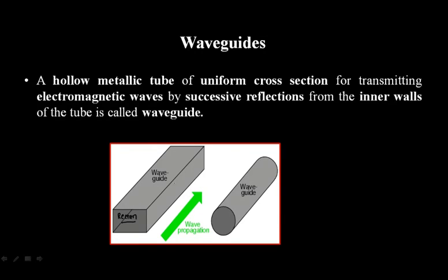Because of its rectangular shape, this waveguide is called a rectangular waveguide. The direction of wave propagation causes waves to reflect off the inner conductor repeatedly — this is the working principle, called total internal reflection. Because of that total internal reflection, waves are carried forward. If you have a circular shape with a radius r, it will be called a circular waveguide.